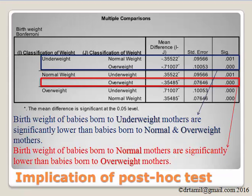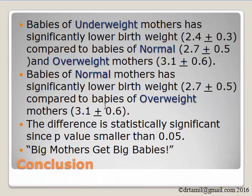When we do the post-hoc test, please note that the best option here is to use the Tamhane's results. The birth weight of babies born to underweight mothers is significantly lower than babies born to normal and overweight mothers — the p-values are significant. The comparison between normal weight and overweight mothers is also significant. In conclusion, babies born to underweight mothers have a significantly lower birth weight of 2.4 kg compared to babies of normal mothers at 2.7 kg and overweight mothers at 3.1 kg.